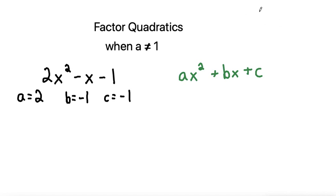What's the strategy? The strategy when we're factoring a quadratic when a is not equal to 1 is we start by finding two numbers that multiply to give us a times c. Well, a times c is 2 times negative 1, which is negative 2.